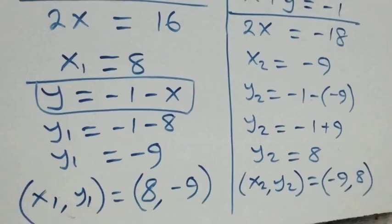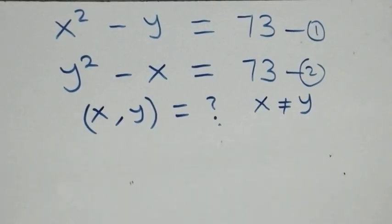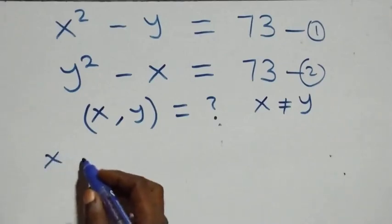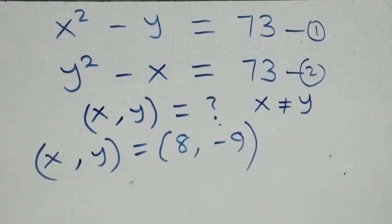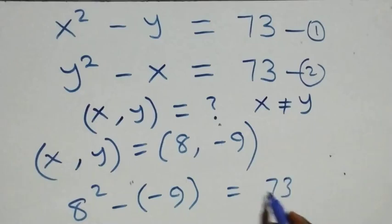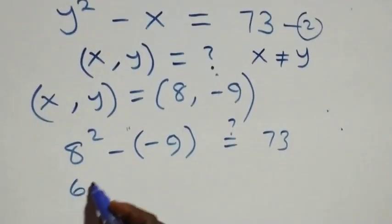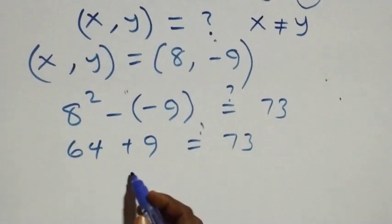Looking at both solutions, we notice the values are interchanged — the x in one solution is the y in the other. The solution set is (8, -9) and (-9, 8). To verify, substituting x = 8, y = -9 into equation one: 8² - (-9) = 64 + 9 = 73, which equals 73. Confirmed.